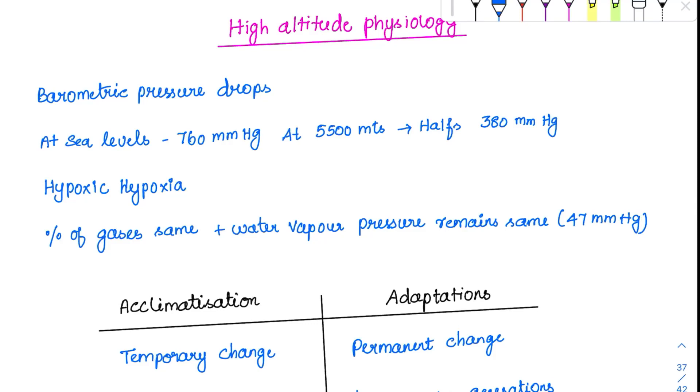High altitude physiology is a form of hypoxic hypoxia, where atmospheric oxygen levels are low. As we ascend, barometric pressure drops from 760 mmHg at sea level to half that at 5500 meters. At the Himalayas, around 8800 meters, oxygen levels are very low, creating severe hypoxic hypoxia.